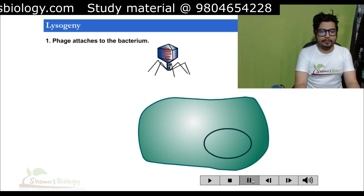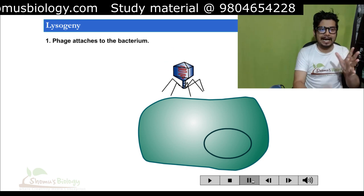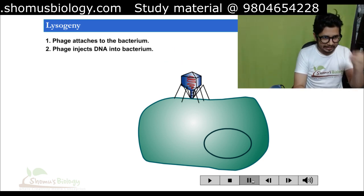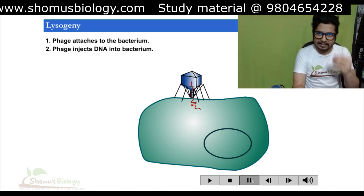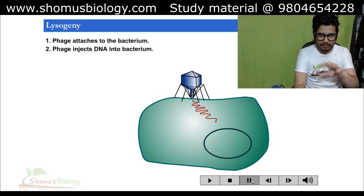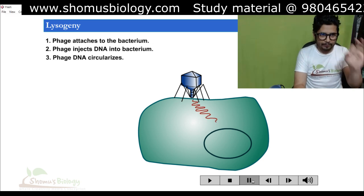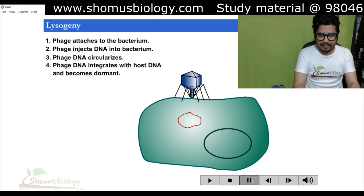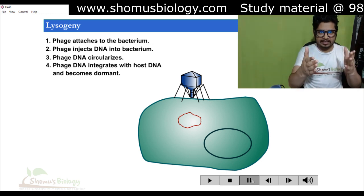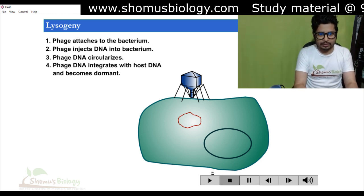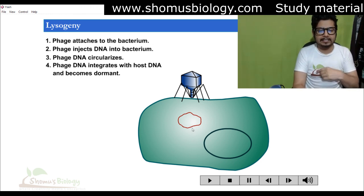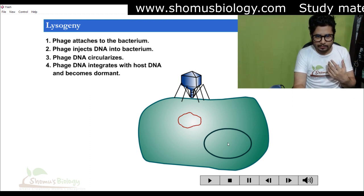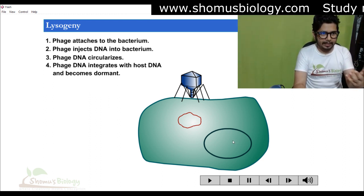In the very first step of lysogeny, the phage attaches itself to the bacterium, then it injects its own DNA inside the bacterium. Then the phage DNA circularizes itself. Now you can see inside the host — the green-colored host cell — the phage DNA is circularized, and we have the bacterial circular DNA as well.